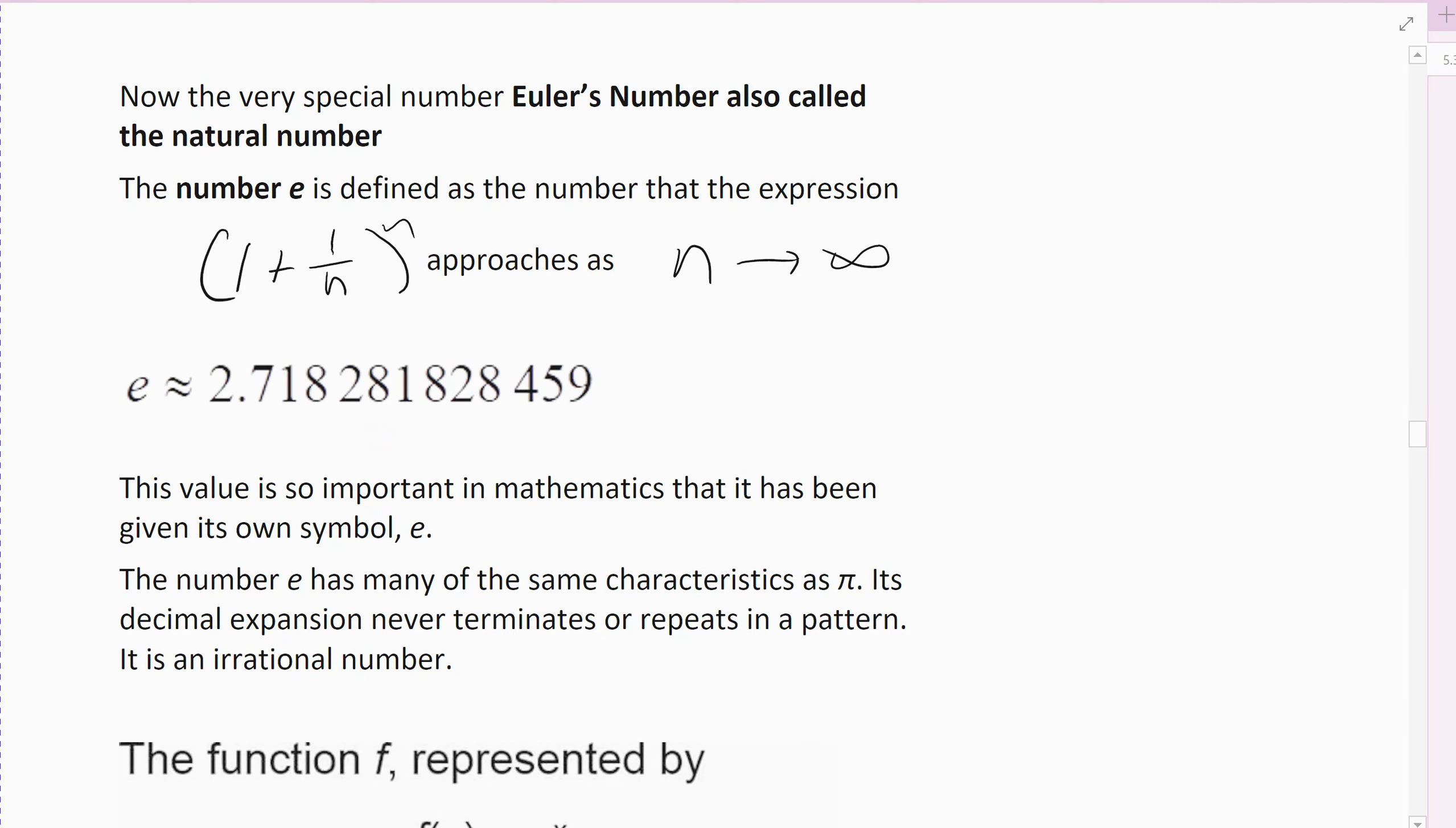All right, now a very special number that's involved in a lot of applications of exponential growth and exponential decay. There's a very special number that was found by Euler, it's a very important number, so it's either called Euler's number because he's the guy that came up with it—or found it, didn't really come up with it—it occurred in nature, he discovered it.